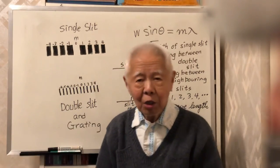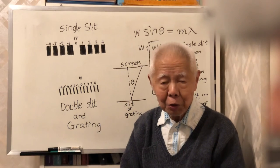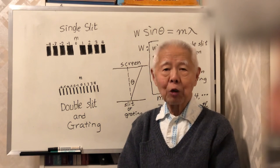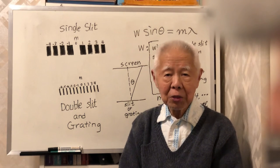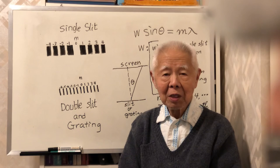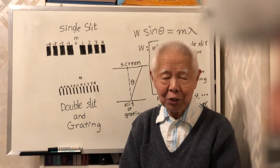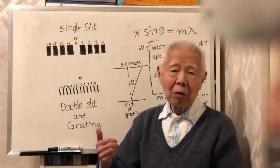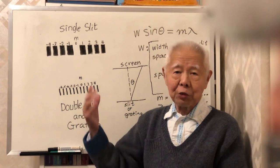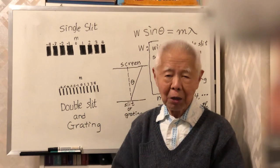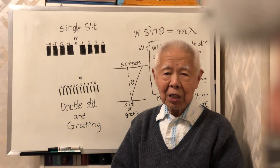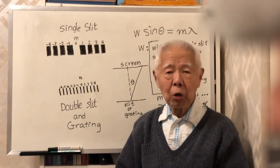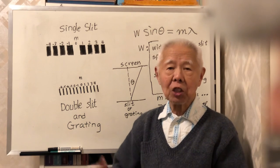So you can use one formula, W sinθ = Mλ, for all three cases. The key thing to remember is: for single slit, M represents the dark fringe; for double slit or grating, M represents the bright fringe. That's the only difference — the formula is the same. Today I just wanted to introduce and summarize the three cases using only one formula. When I have another chance I will give you worked examples, but that's it for today.